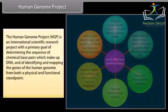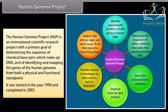The Human Genome Project is an international scientific research project with the primary goal of determining the sequence of chemical base pairs which make up DNA, and of identifying and mapping the genes of the human genome from both a physical and functional standpoint. It was started in the year 1990 and completed in 2003.